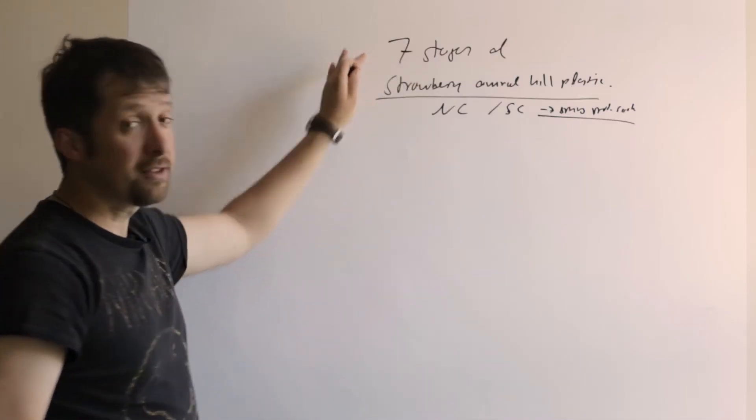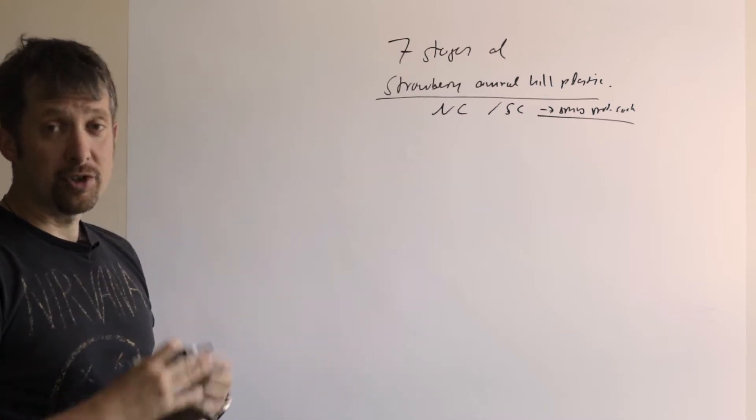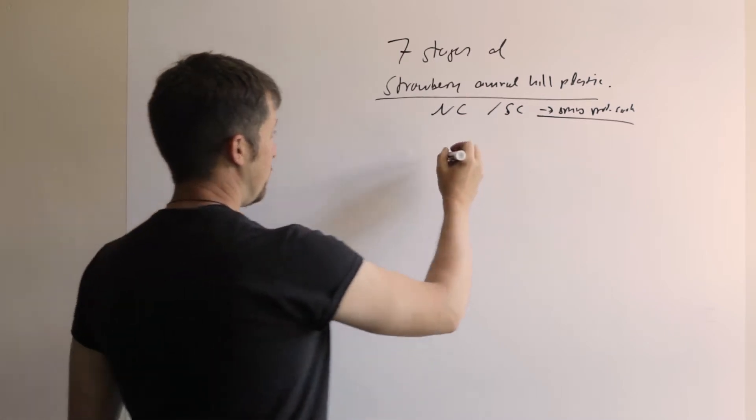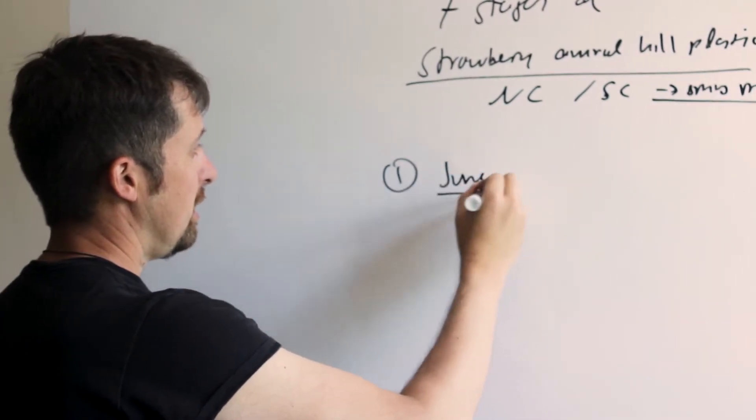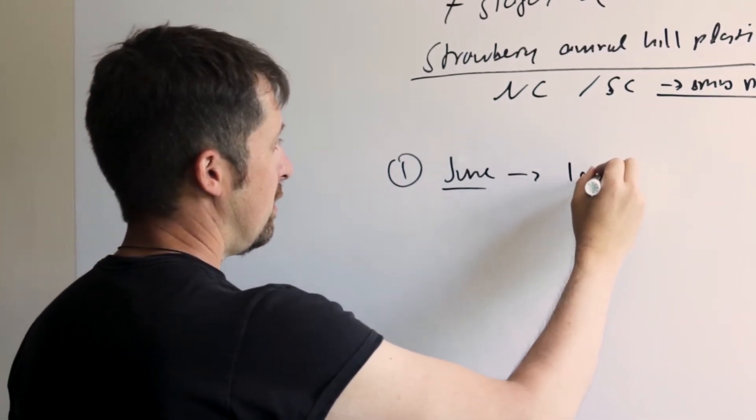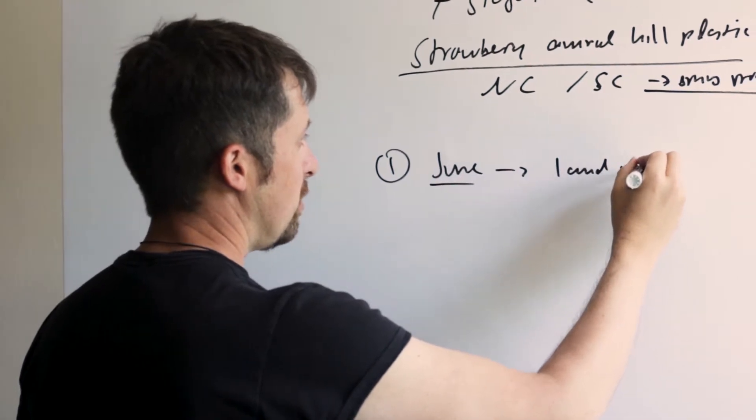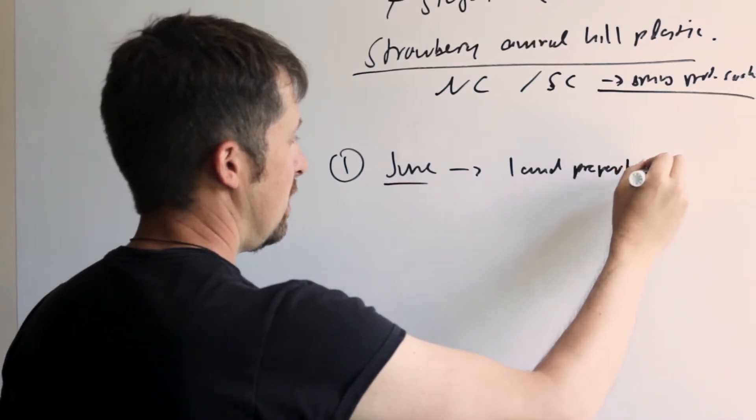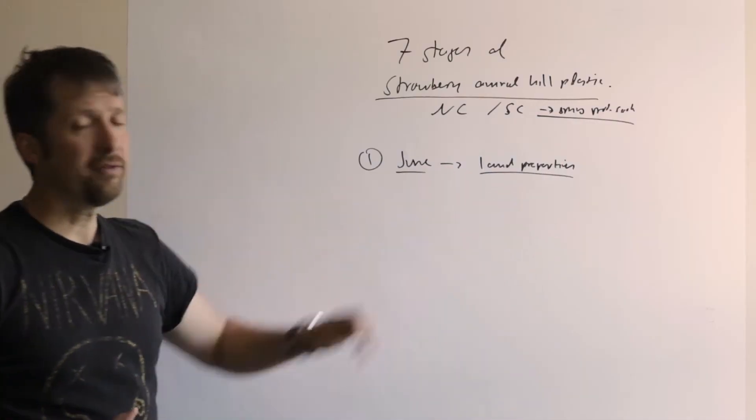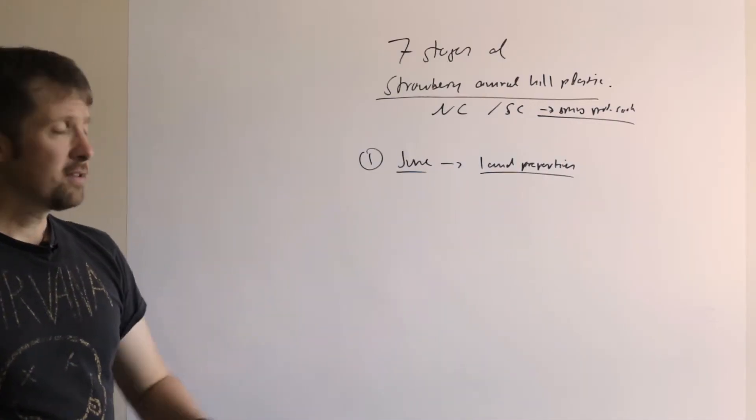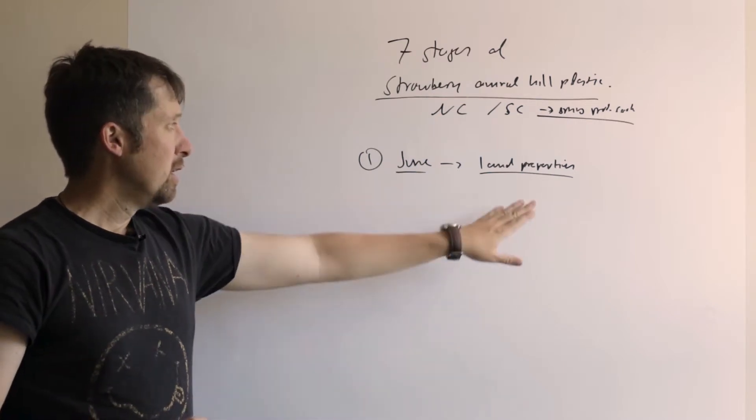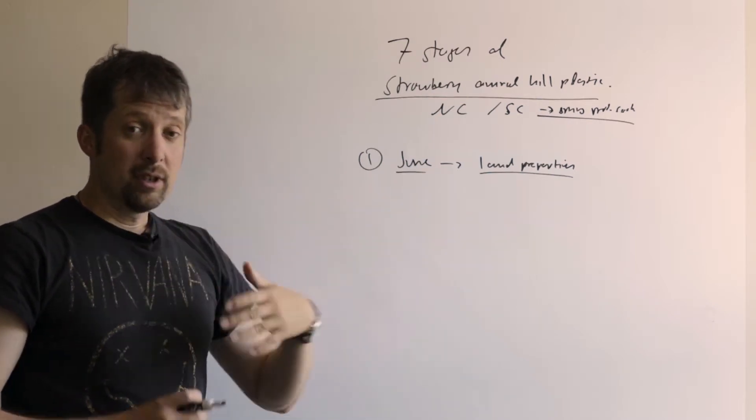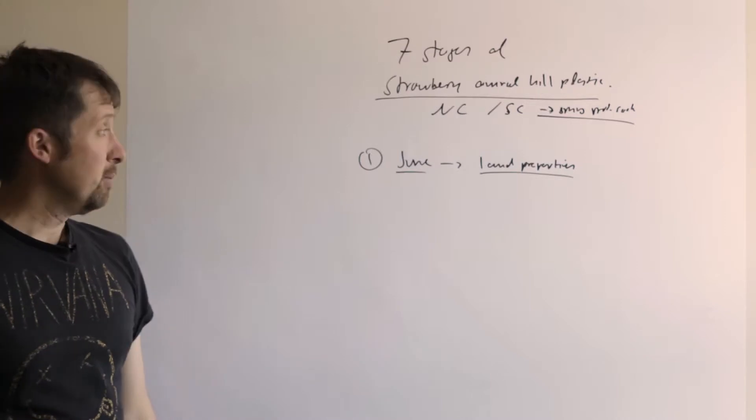We have seven stages and I want to say we usually start in June with our land preparation. Stage number one is in June and that's the land preparation. We talked about this in an earlier video, which means you are going to have to take your soil samples, you are going to have to incorporate lime if you need to, and you have to prepare your land for bed shaping later on.